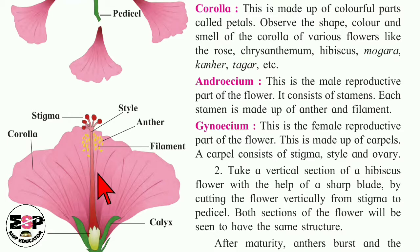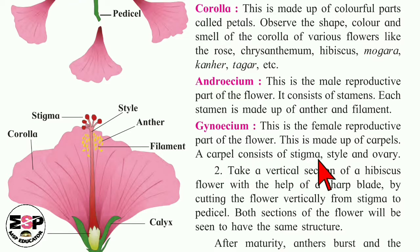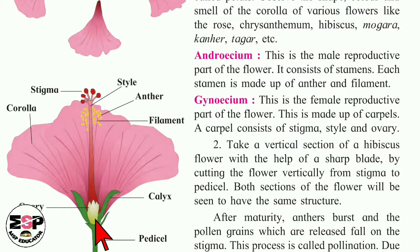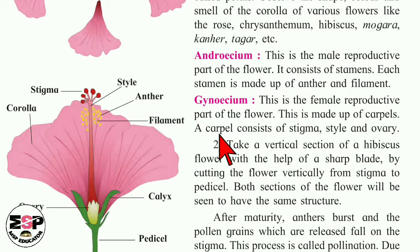The gynoecium is the female reproductive part of the flower and is made up of carpels. A carpel consists of stigma, style, and ovary. The red velvety part is called the stigma. The long tubular structure is called the style. The whitish-yellow part at the end is the ovary. These three — stigma, style, and ovary — together form a carpel, which makes up the gynoecium.